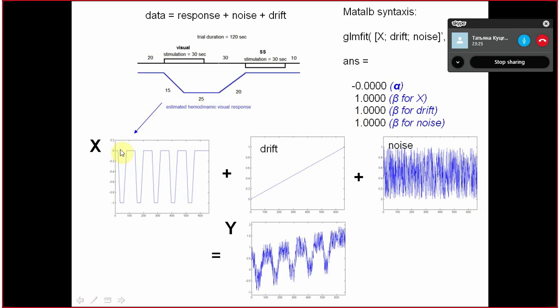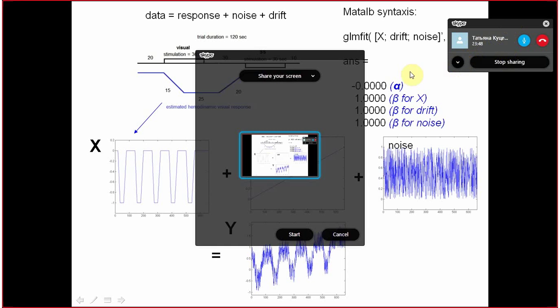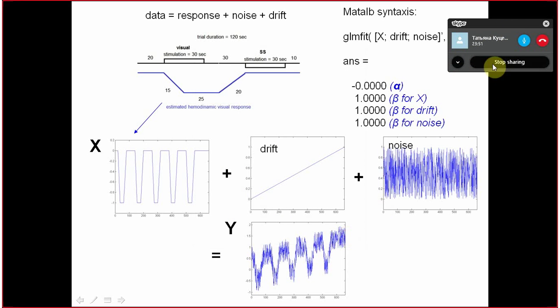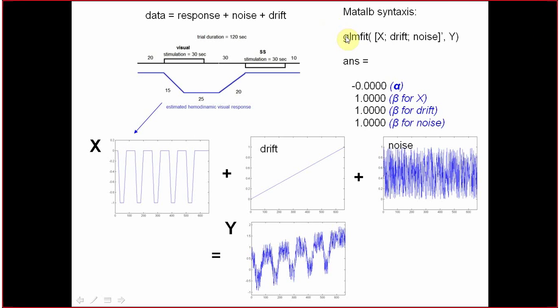So if we sum up all those three components, we get something like this: quite noisy, but at the same time it is very clear that the response is there. And this function is what stands for generalized linear model.